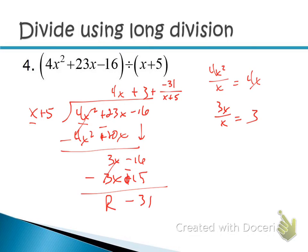Because there's a remainder, x + 5 is not a factor of 4x² + 23x − 16. It doesn't mean the polynomial won't factor — it just means x + 5 is not one of its factors.